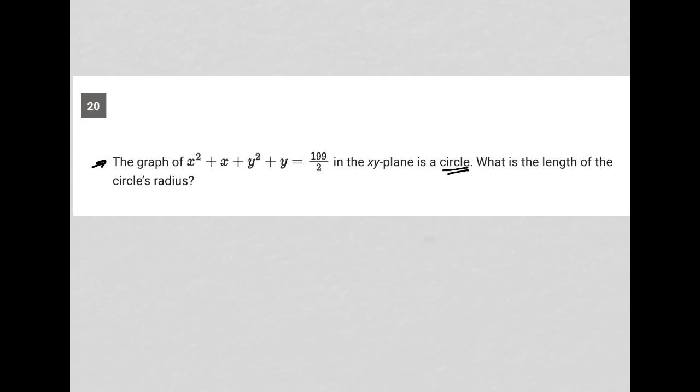The equation for a circle should look like (x - h)² + (y - k)² = r². The fact that it doesn't already look like that means I'm going to need to use completing the square as a method of getting this to look like that.